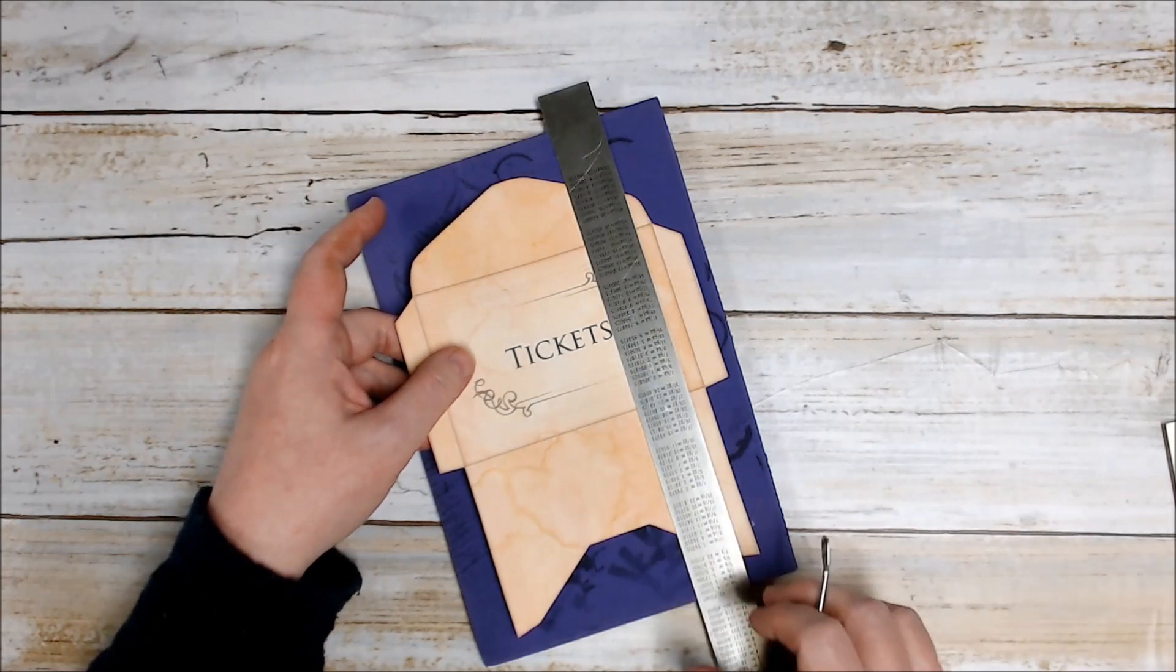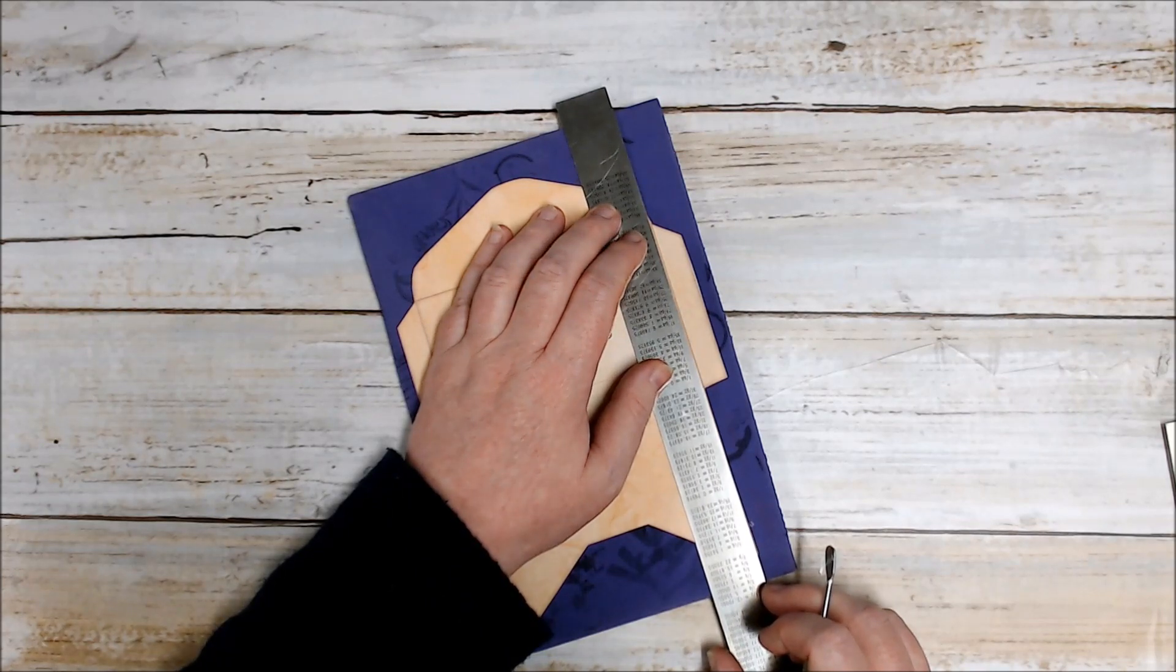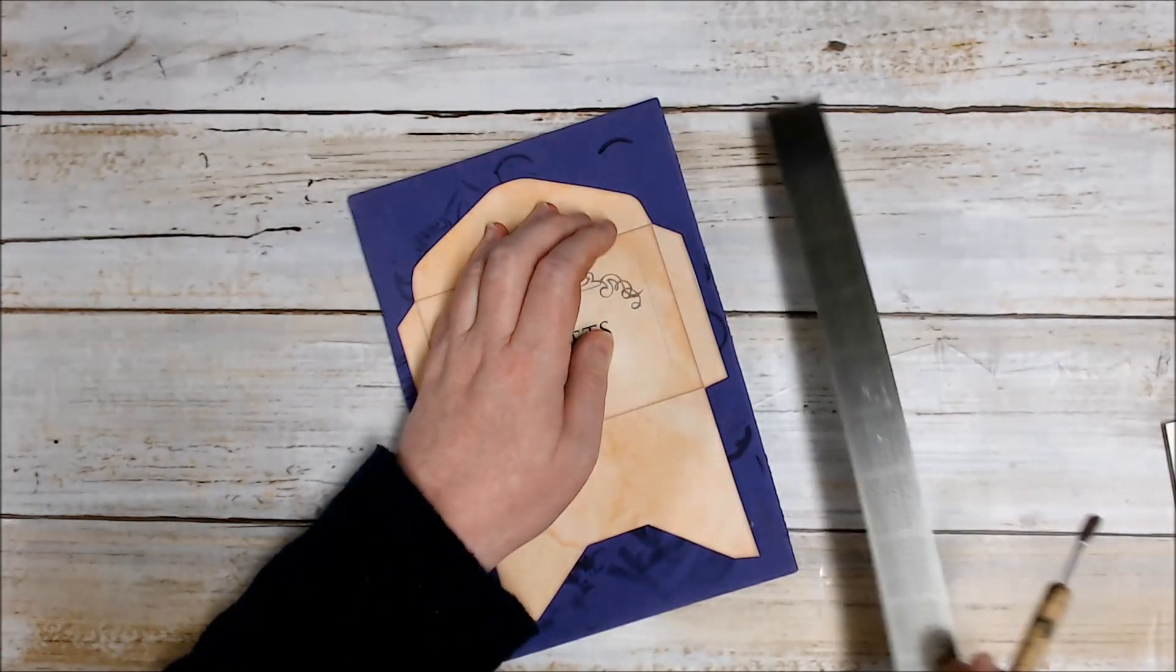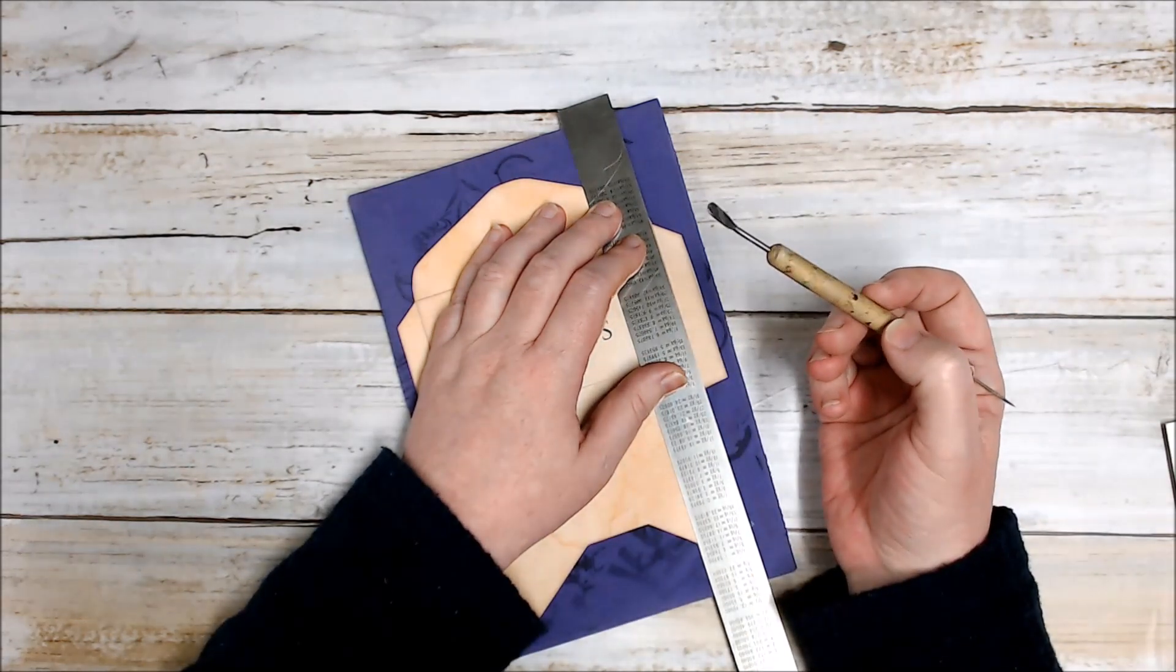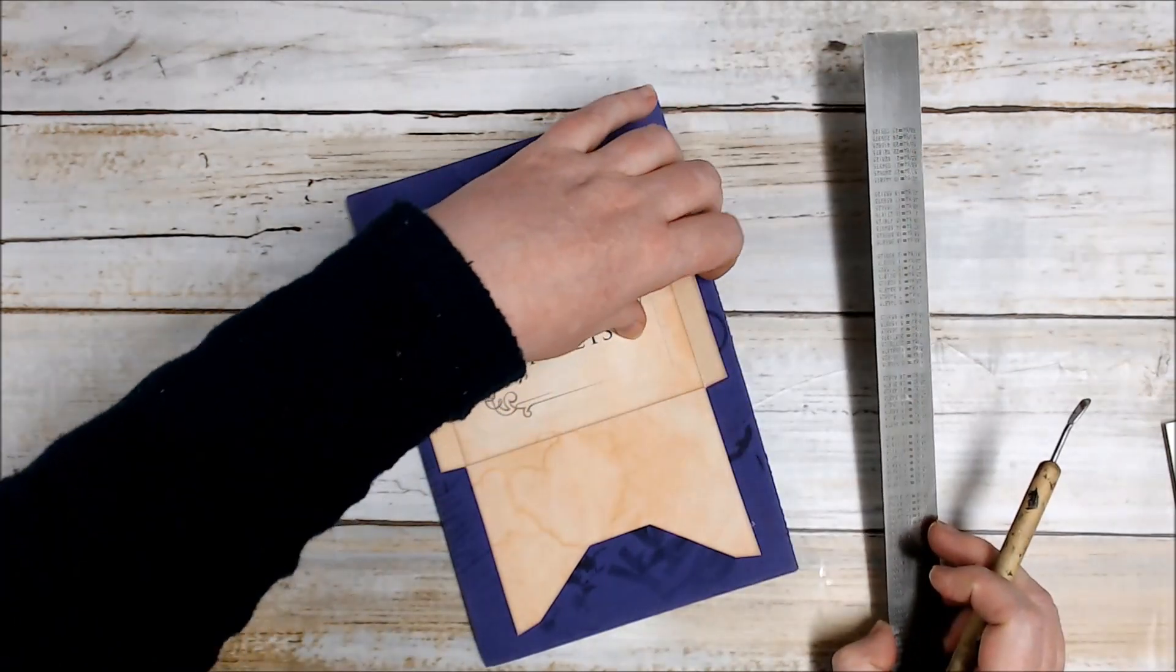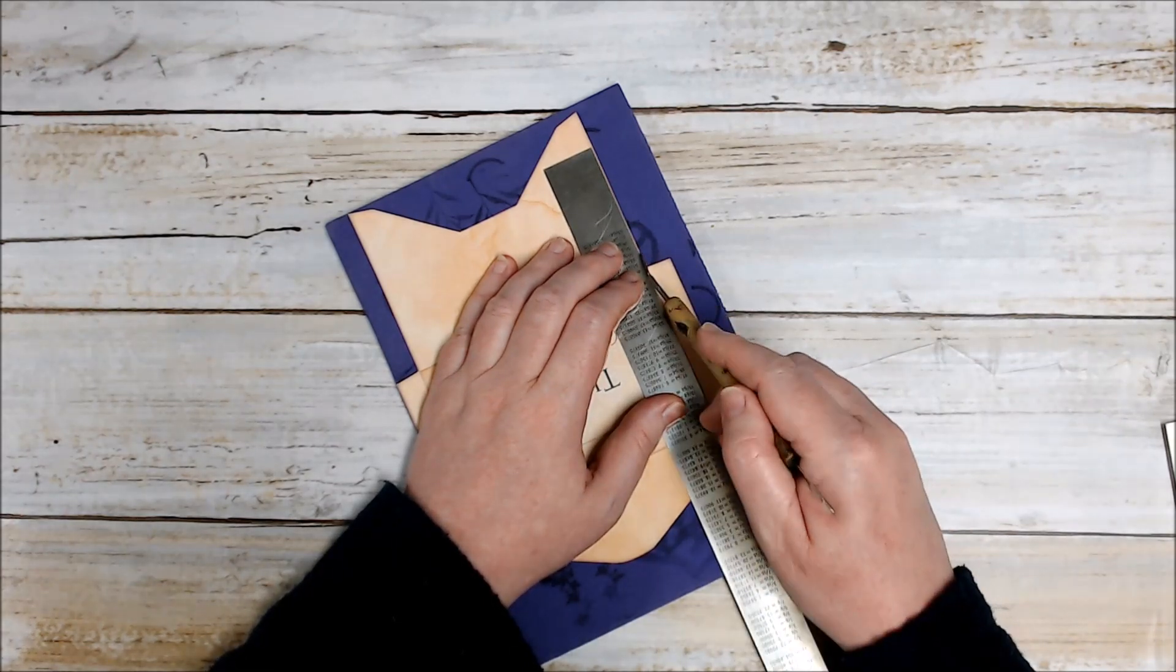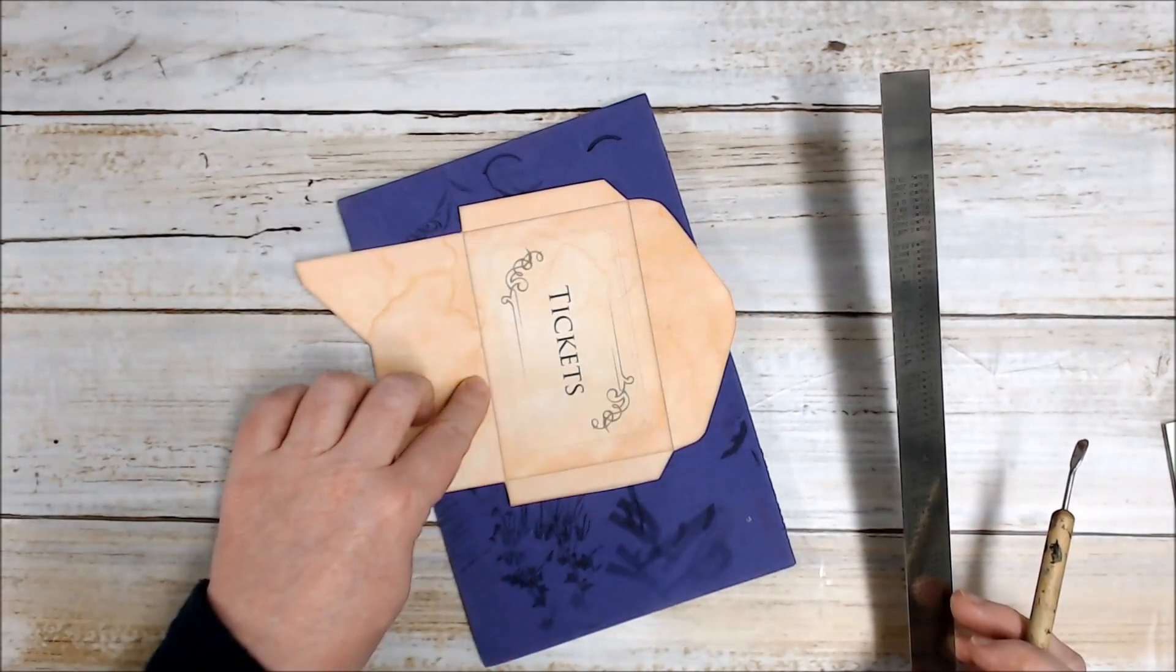I don't want to press too hard because I will actually go straight through the paper. I'm going to line up my ruler along the edge of my tab line here. You can see there's a line here so it's very easy to line it up. Taking my scoring tool, I'm just going to gently run it down the edge. I'm going to do the same on the other side, and then score along these two lines as well.